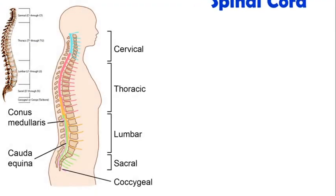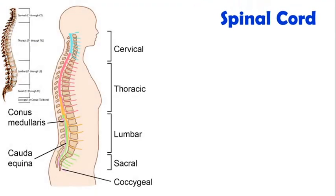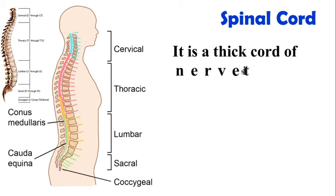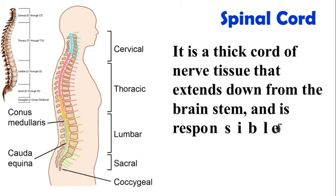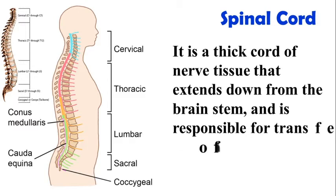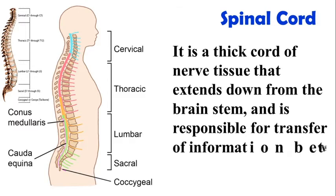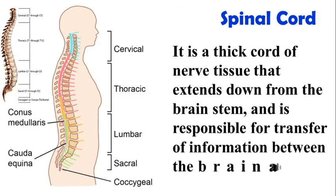Spinal Cord: It is a thick cord of nerve tissue that extends down from the brain stem, and is responsible for transfer of information between the brain and the rest of the body.